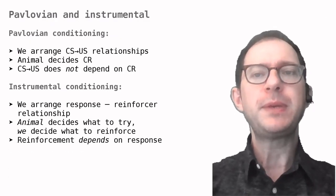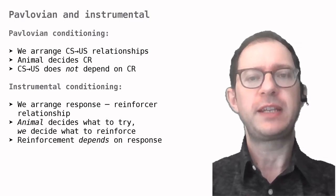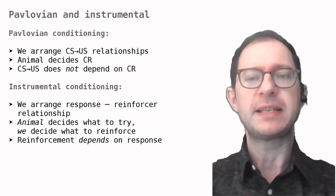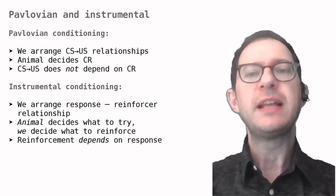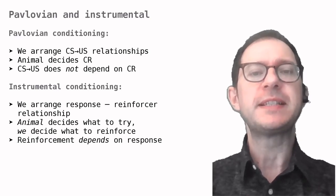Now that we have seen a bit of how instrumental conditioning works, let's compare it to Pavlovian conditioning. In Pavlovian conditioning, the CS-US relationship is arranged completely by us. In other words, what happens is beyond the animal's control. The animal just reacts by learning whatever behavior it thinks is appropriate.